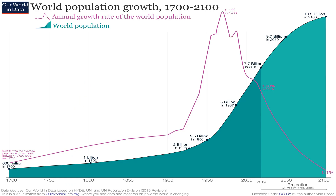We have here the world population growth from 1700 to 2100. From 1700, it is 600 million, while for 2100, it is approximately 10.9 billion. As we can observe, the developing regions in this time will have 97% of the world's population growth — a growth of 1.2 billion people between 2013 and 2030.